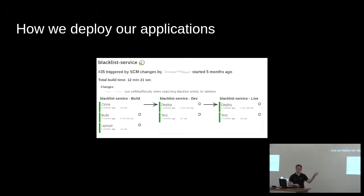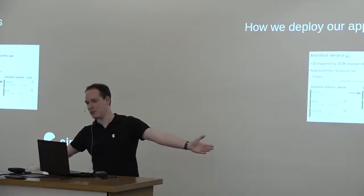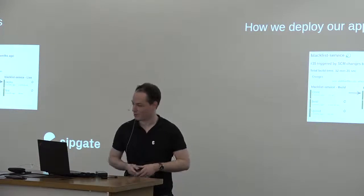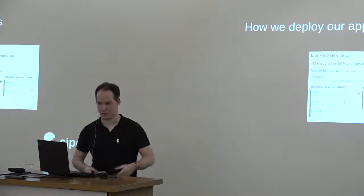Before we had this, all our developers had to package and deploy software themselves and had to know which server to connect to. That actually reduced the time to ship new software to a live system from a probation period of six months down to probably the second week of your time at ZipGate, and of course made things a lot more consistent.